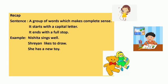Children, note — all these three are groups of words but they are making sense. They are giving us information. The first one tells us about Nishita. The second one tells us what Shreyan likes to do. The third one tells us that somebody has a new toy. Again, note that all these three sentences are starting with a capital letter and they end with a full stop. Hope you have understood what a sentence is.